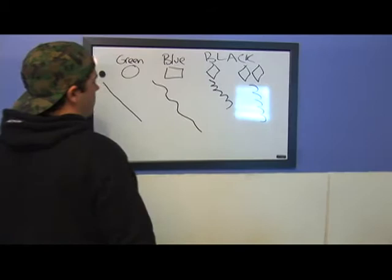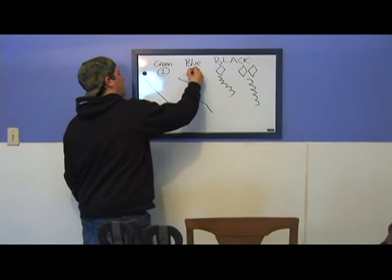Basically the easiest way to do it is one, two, three. One, you're a beginner. Two, you're intermediate. Three, you're advanced.